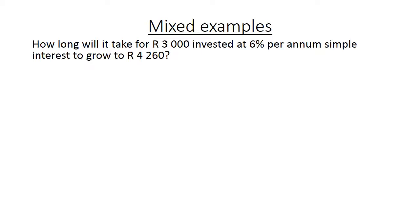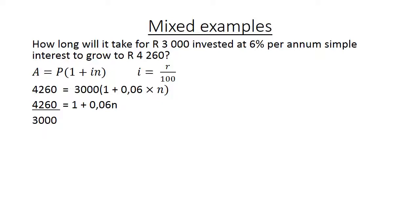Mixed examples. How long will it take for 3,000 Rand invested at 6% per annum simple interest to grow to 4,260? We are going to use this formula and substitute. Into the A you substitute 4,260 because that will be the final amount. Equals to 3,000 Rand, 1 plus 0.06, remember 6% divided by 100 gives you 0.06, times n, which is the time. 4,260 equals then 1 plus 0.06n because we divide both sides by 3,000. It gives you 1.42, and then you move the 1 over to that side, minus 1, and it equals to 0.06n. Both sides you are going to divide now by 0.06, and n is then 7 years. So it will take 7 years for an investment of 3,000 Rand to grow to 4,260.